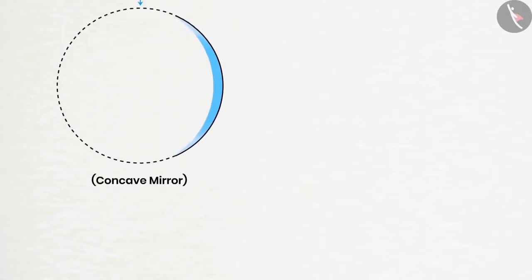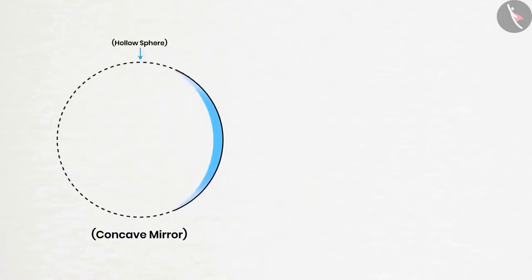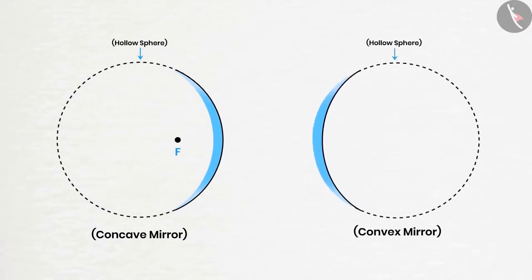Another interesting fact about spherical mirrors is that in the case of concave mirrors, the focus lies in front of the mirror. While in the case of convex mirrors, the focus lies behind the mirror.